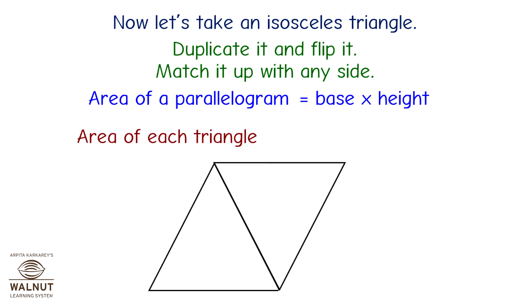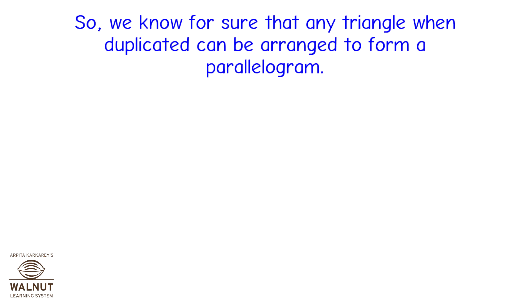So the formula works for scalene and isosceles triangles. Now can you check for equilateral triangles? Duplicate it and flip it. Match it up with any side. Do we get a parallelogram? Yes, we do. Since all the three sides are equal, even if we match it up with the other sides, it's going to look the same. So, we know for sure that any triangle when duplicated can be arranged to form a parallelogram.